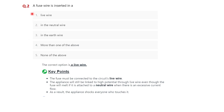Question two: a fuse wire is inserted in which wire? Options are: live wire, neutral wire, earth wire, or more than one of the above. The correct option is live wire. The fuse must be connected to the circuit in the live wire. Even if the fuse melts when there is excessive current flow, if it is attached to the neutral wire the appliances will still be linked to high potential through the live wire and could shock anyone who touches them.